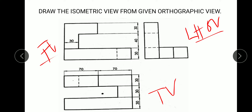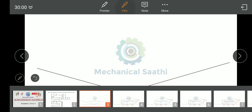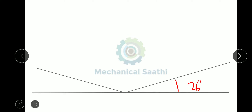The first thing we need to do is draw a rectangle with length 140 and width 90. To start the drawing, we draw a horizontal line, then draw two lines at 30 degrees to the horizontal — one at 30 degrees on each side — and with this we begin the isometric construction.